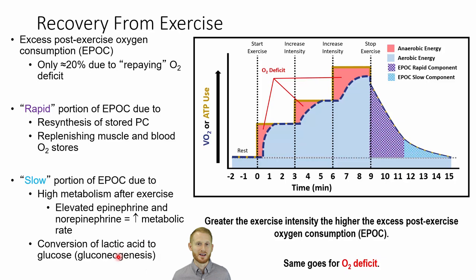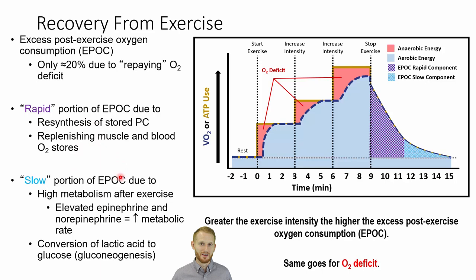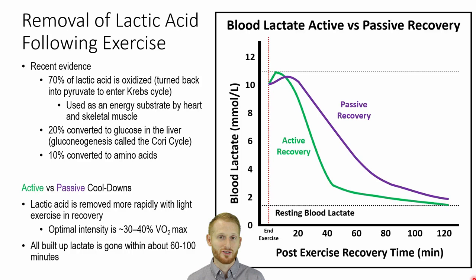Just like with the oxygen deficit — where greater exercise intensity means more oxygen deficit — the greater the exercise intensity, the greater the EPOC is going to be. We need to do these things that happen during the slow and rapid components of EPOC more after an intense bout of exercise versus a more moderate bout. During the slow component, one of the things happening is our body is dealing with the lactic acid produced by glycolysis and anaerobic metabolism.